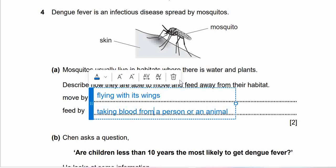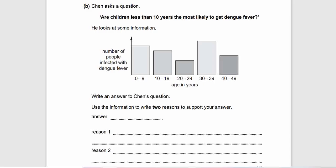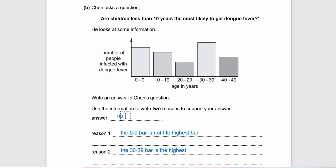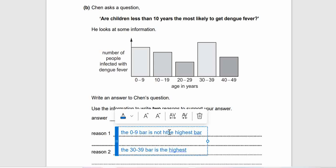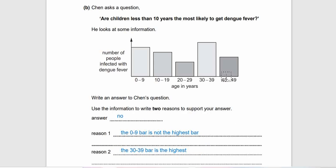Question 4b: Chen has a question - are children less than 10 years the most likely to get dengue fever? He looks at some information, number of people infected with dengue fever. This is a bar graph - age in years: 0-9, 10-19, 20-29, 30-39, 40-49. Write an answer to Chen's question. Use the information to write two reasons to support your answer. Put on your thinking caps and pause for a while. The answer is no. Why? Because the 0 to 9 bar is not the highest bar, and the 30 to 39 is in fact the highest.